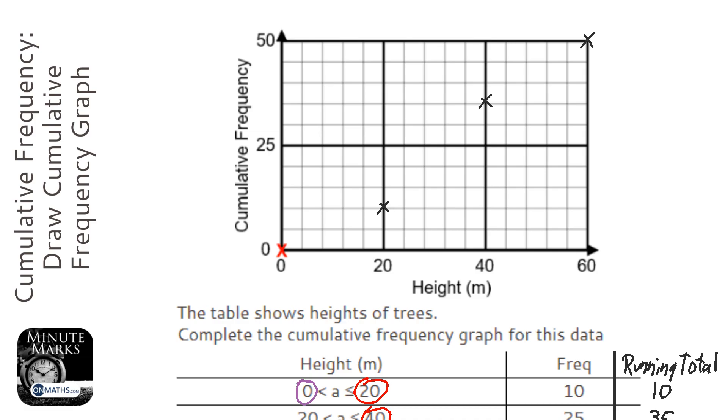Now you've got an option here. You can either join them up with a curve or join them up with straight lines. Technically speaking, you should use a curve, but you'll always get the marks for straight lines.